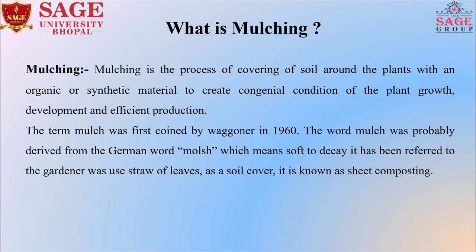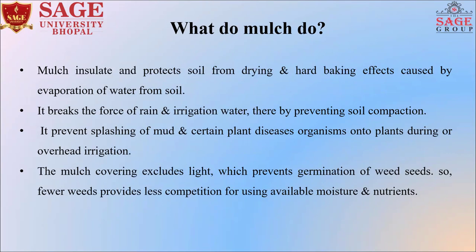It has been referred to the gardener's use of straw and leaves as a soil cover, known as seed composting. Mulch insulates and protects soil from drying and harmful effects caused by evaporation of water from soils. It breaks the force of rain and irrigation water, thereby preventing soil compaction. Mulches also prevent splashing of mud and certain plant diseases onto plants during overhead irrigation. The mulch covering excludes light, which prevents germination of weed seeds, so fewer weeds provide less competition for available moisture and nutrients.